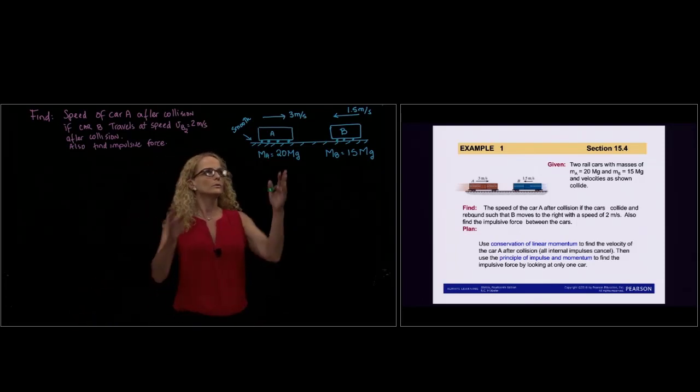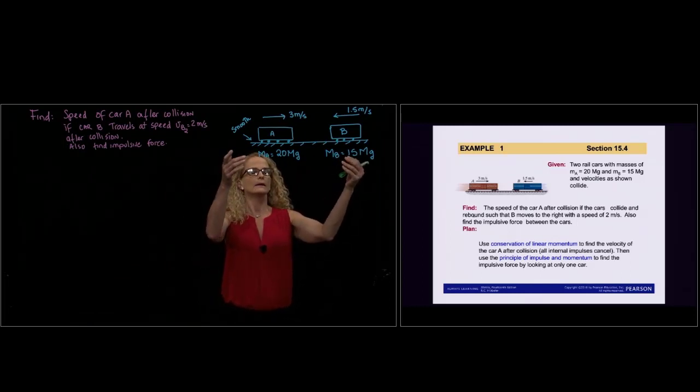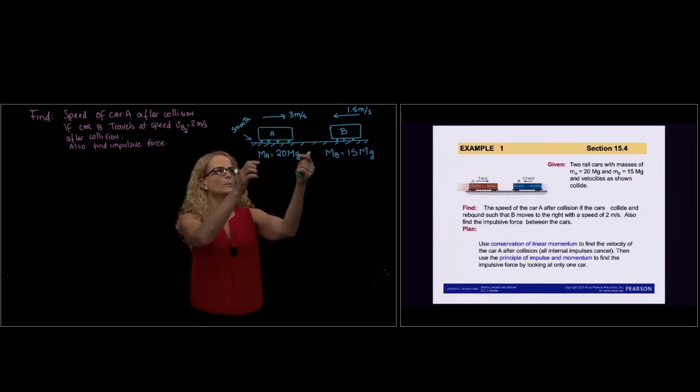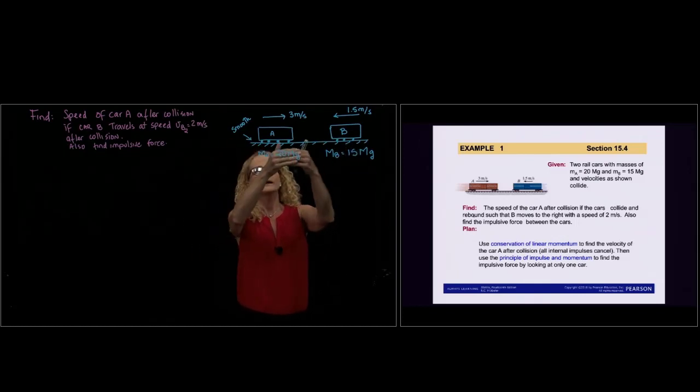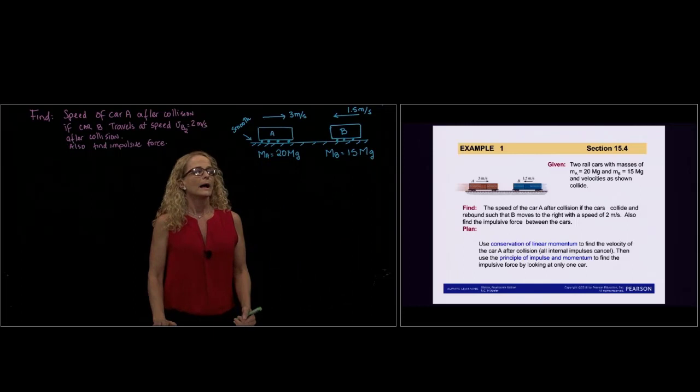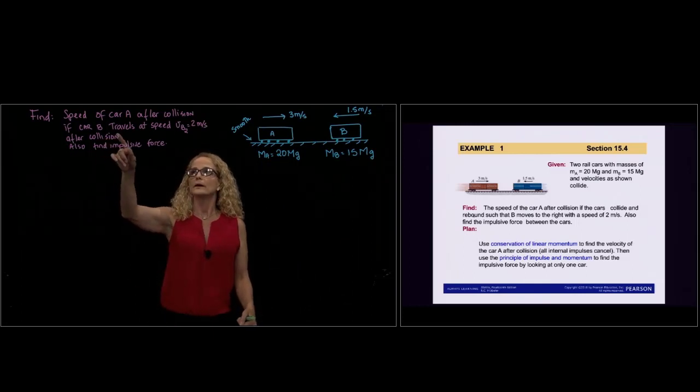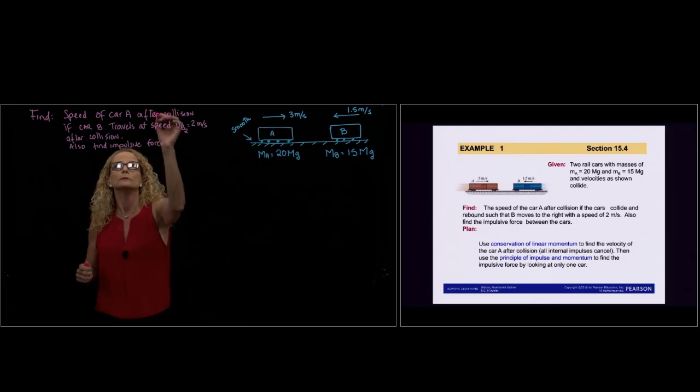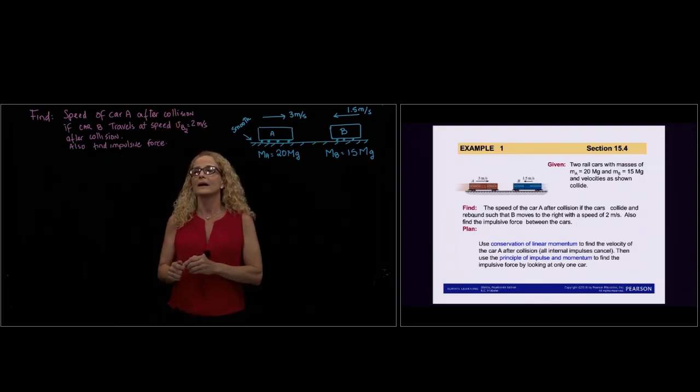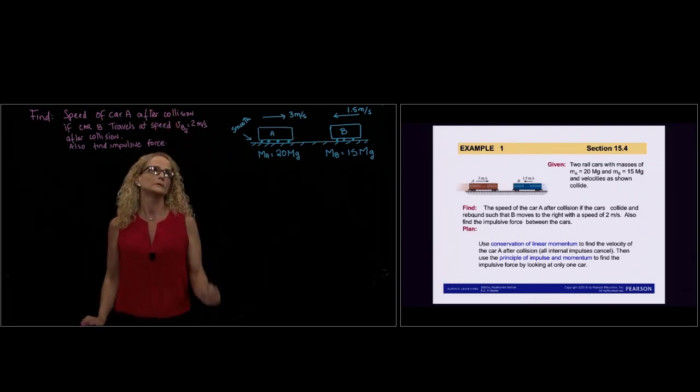We have two rail cars traveling in opposite directions. They collide and then split. We need to find the speed of car A after collision if car B travels at a speed of 2 meters per second.